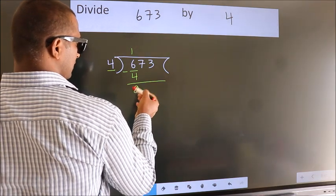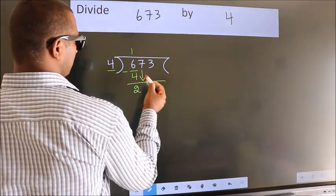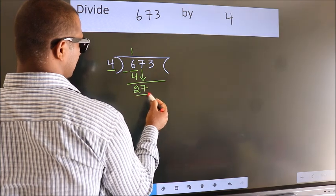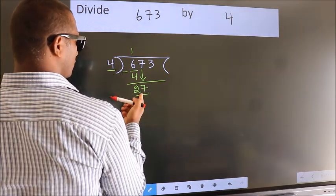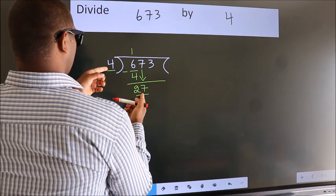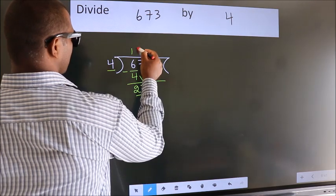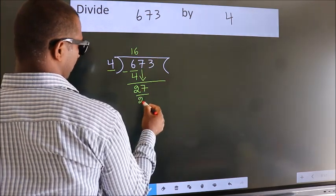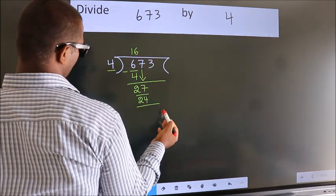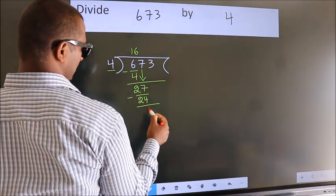After this, bring down the next number. So, 7 down. So, 27. A number close to 27 in the 4 table is 4 times 6, which is 24. Now we subtract. We get 3.